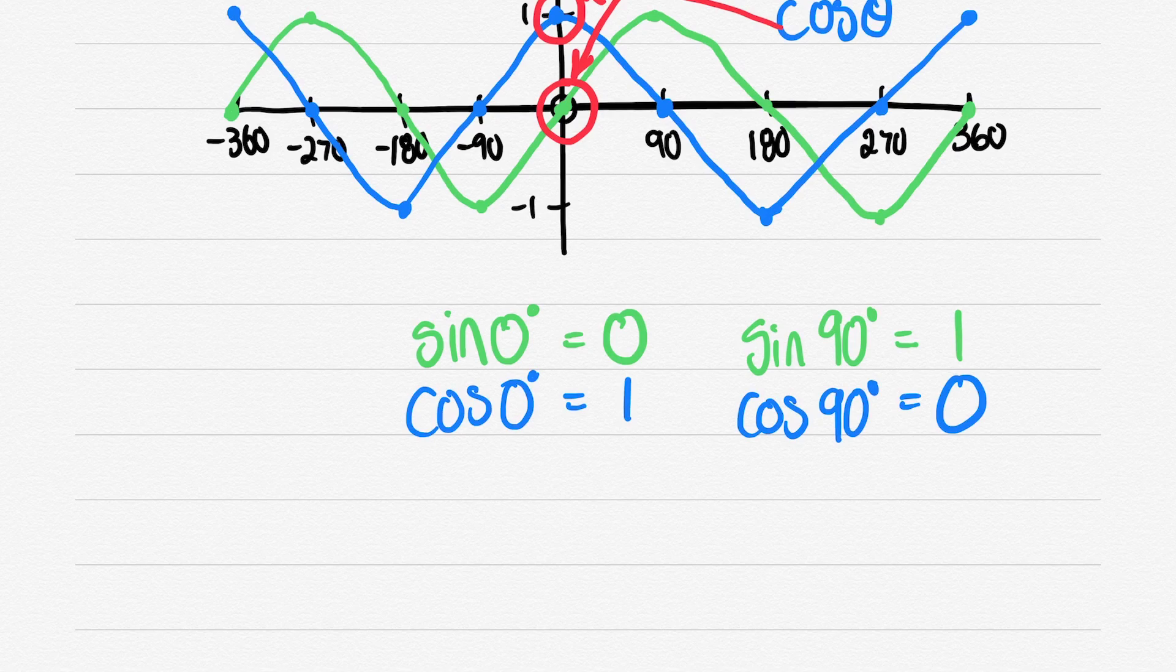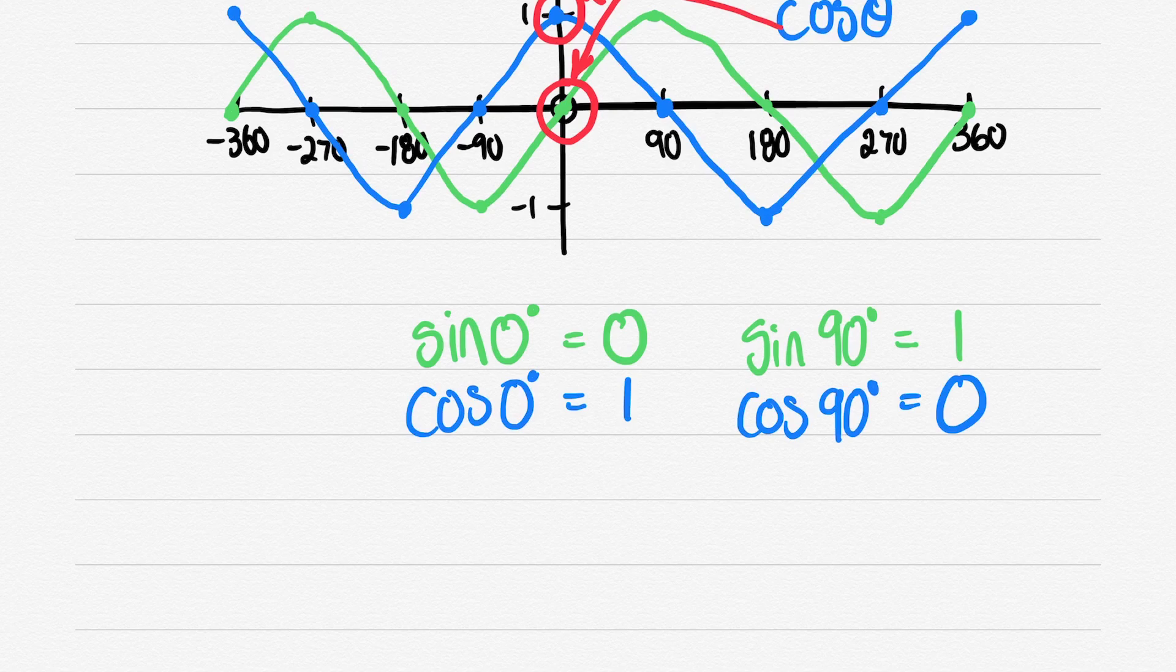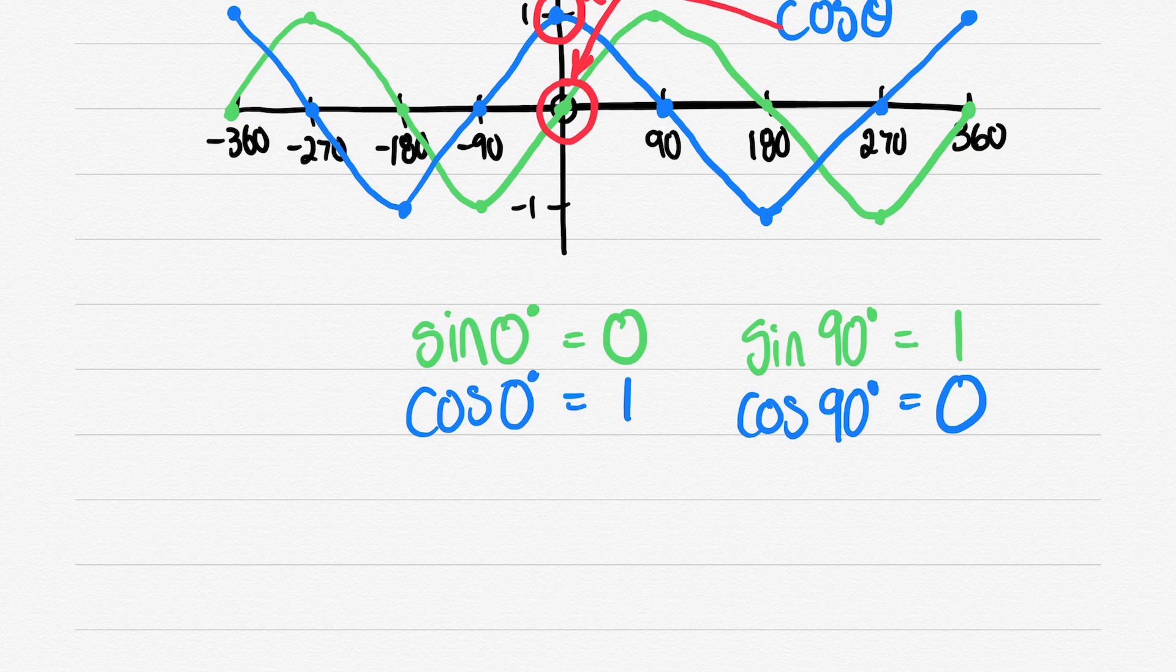So look at that. We've got sin 0° equals 0, sin 90° equals 1, cos 0° equals 1, and cos 90° equals 0. I don't think that's a coincidence, and it's quite honestly just a shift—shifted 90°.